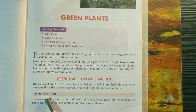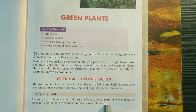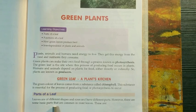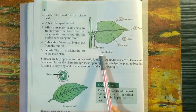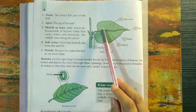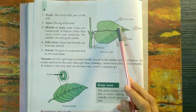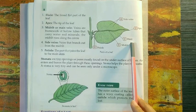Parts of a leaf. Leaves are of different shapes and sizes and have different parts, but there are some basic parts that are common in most leaves. The broad, flat part of a leaf which is green in color is called the blade.